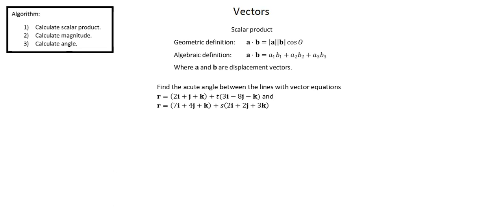Our problem reads: find the acute angle between the lines with vector equations r equals quantity 2i plus j plus k plus t times quantity 3i minus 8j minus k, and r equals quantity 7i plus 4j plus k plus s times quantity 2i plus 2j plus 3k.